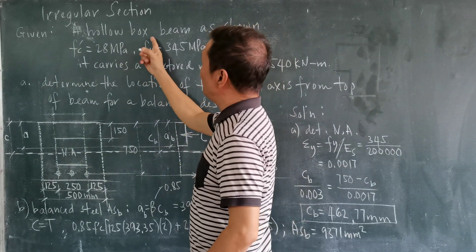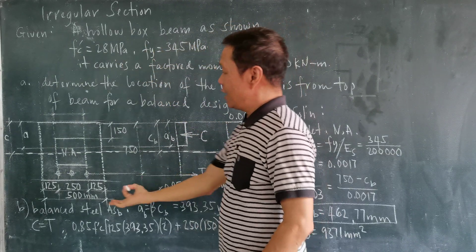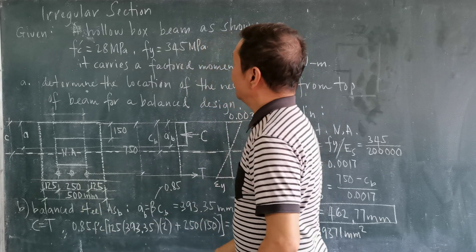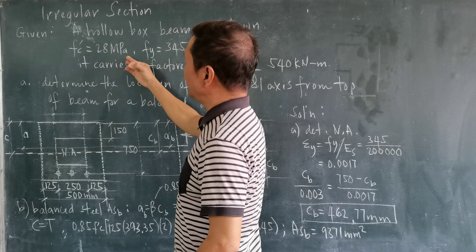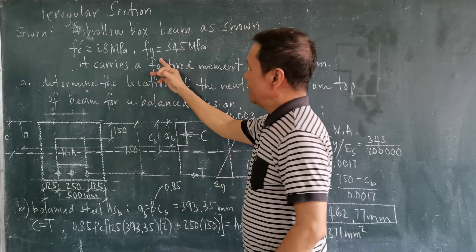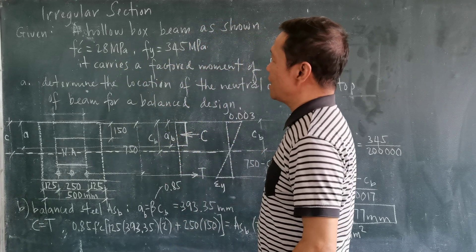The problem is a hollow box beam, as shown here, has the following material properties. F' is 20 MPa, FY is 345 MPa.